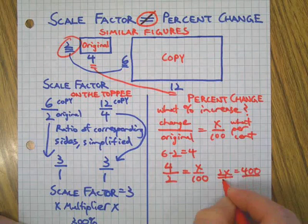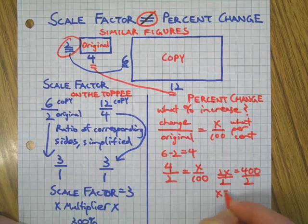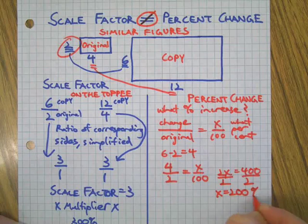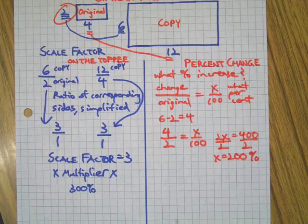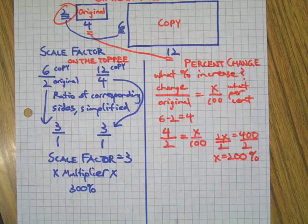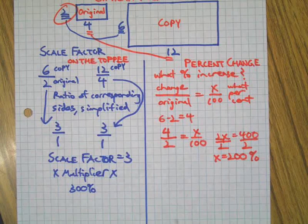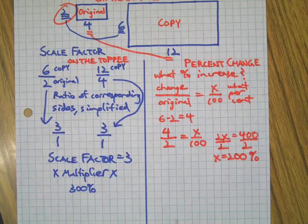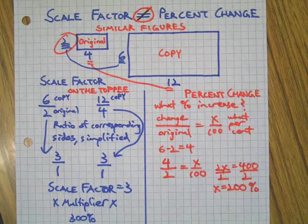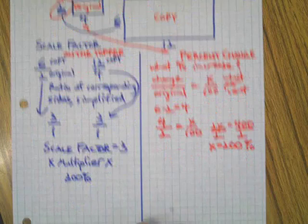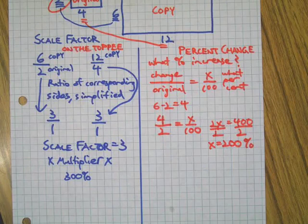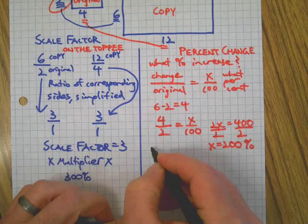Aha, so see how those are different? We've got a percent increase of 200 percent, meaning if you take two originals and add it to the original, then you have the copy. So it increased by 200 percent. And of course, if you're wondering, hey, does it matter if I take another pair of corresponding sides, would it still work? Let's test it out. That's what we do in math, right? If you're wondering what if, test it out.